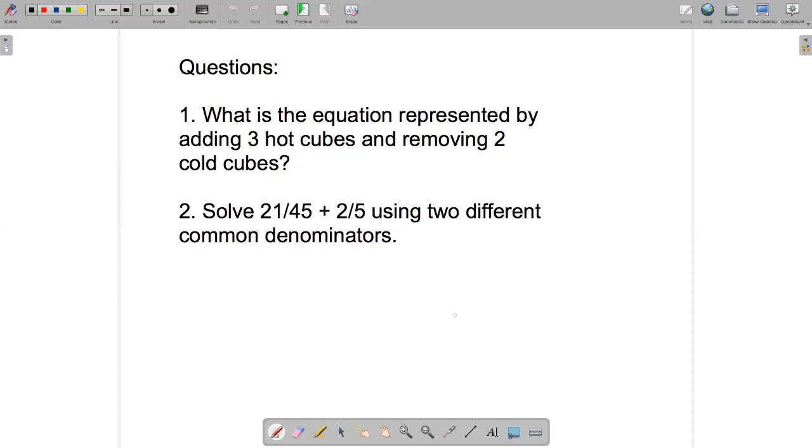Question two is using the ideas from part three, which was where we were adding and subtracting fractions. The question is, solve the fraction problem 21 over 45 plus 2 over 5 using two different common denominators. One of them can be the least common multiple, but the other one should be a different common denominator, and it'll actually allow you to get to the answer more quickly.